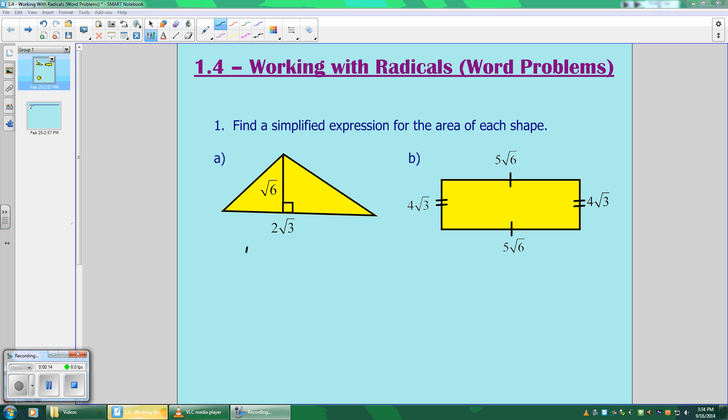And we're going to do that first by putting the formulas down. So the formula for the area of a triangle is base times height divided by 2. And you're going to substitute each of your numbers into the formula. So the base is 2 root 3 times your height root 6 over 2.